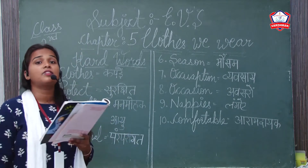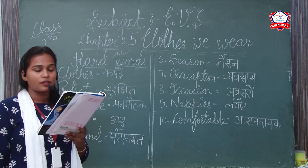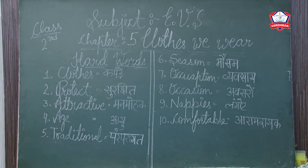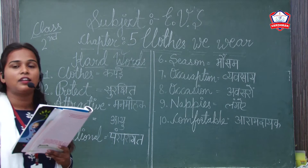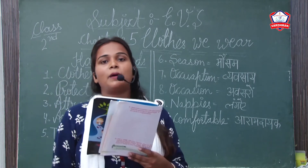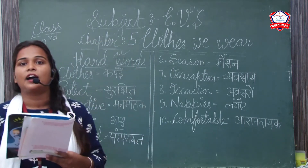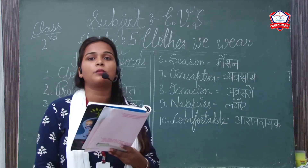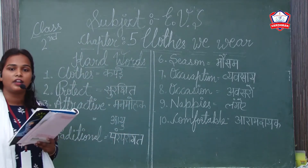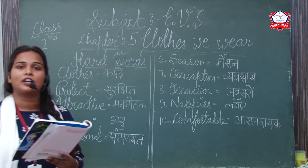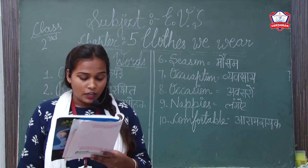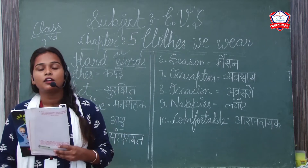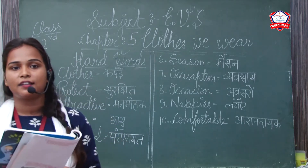Age means ayu. Traditional places means paramparagrhat — like Rajasthani, Punjabi, and Bengali traditional dress. Season means: in summer we wear cotton cloth, in winter we wear woolen cloth, and in the rainy season we wear raincoats, gumboots, etc.